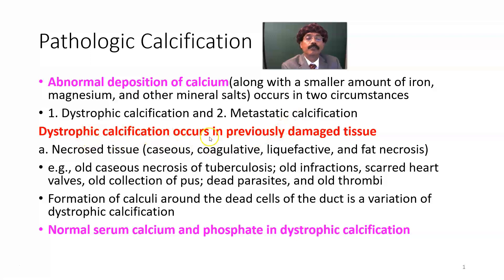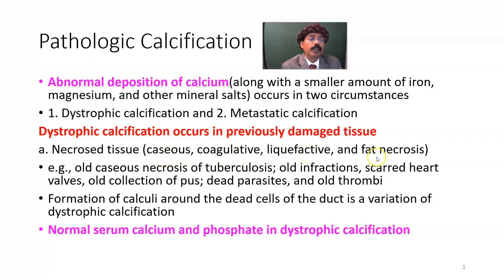Dystrophic calcification occurs in previously damaged tissues like necrosed tissue — all types of necrosis, like caseous necrosis, coagulative necrosis in solid organs, liquefactive necrosis in the brain or in an abscess, and also in fat necrosis.